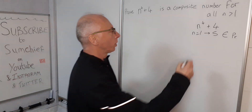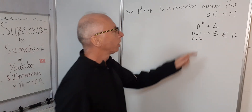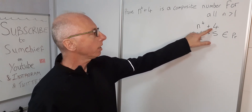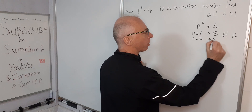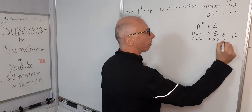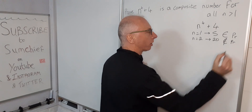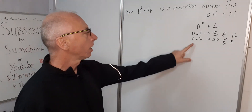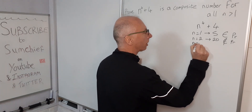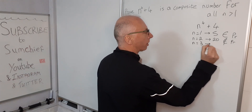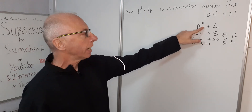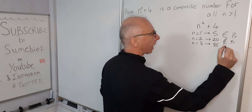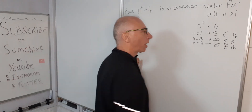What about n equals 2? We get 2 to the power of 4, which is 4 squared, that's 16, plus 4 is 20. And we know that 20 is not a prime number. For n equals 3, the first odd number: 3 squared is 9, square that again is 81, plus 4 is 85. And that is also not a prime number.